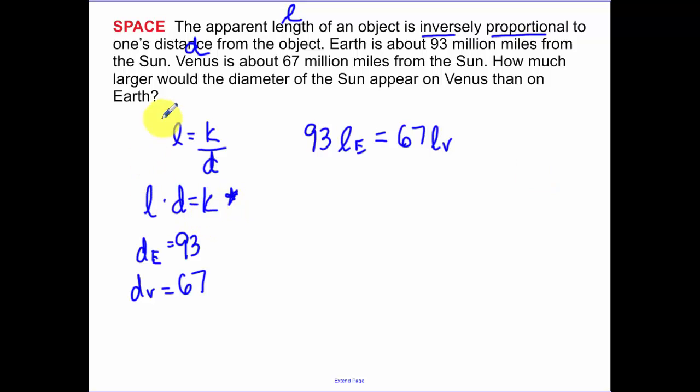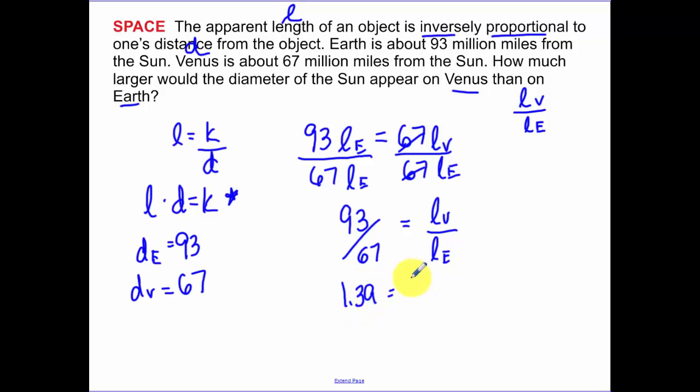So now what you want to think about is we want to find how much larger would the diameter of the Sun appear on Venus than on Earth. So I'm looking for Venus over Earth. If I divide both sides by 67, that's going to cancel those out. And I divide by the length on Earth, because I'm looking for how much larger Venus is than Earth. We have 93 over 67 is going to be the ratio of them, or it's going to tell us how much larger it is. So that's going to be 1.39 is the ratio of those, which is telling us how much larger Venus is than Earth.